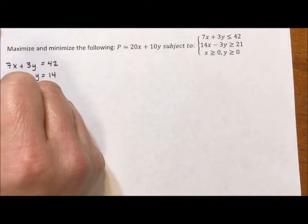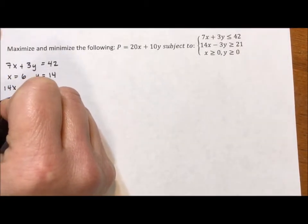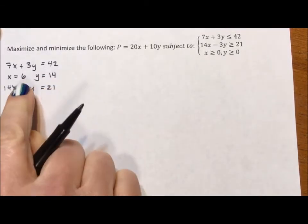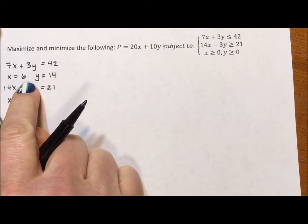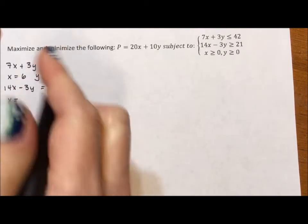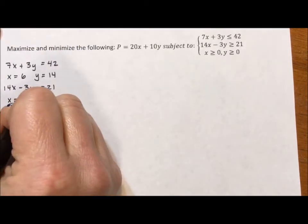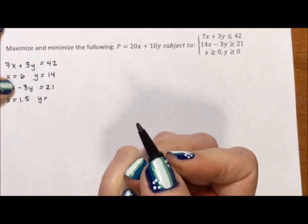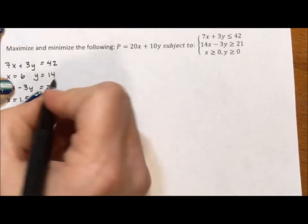For my second line, 14x minus 3y equals 21, I'm going to do the same thing. My x-intercept is going to be found when y is equal to 0, so 14x equals 21 at 1.5, and my y-intercept is going to be when negative 3y is 21 or negative 7.